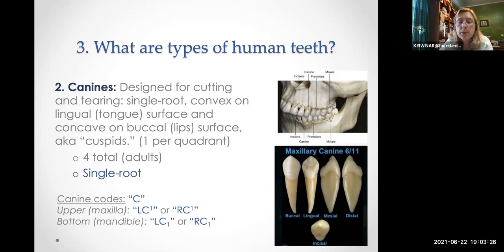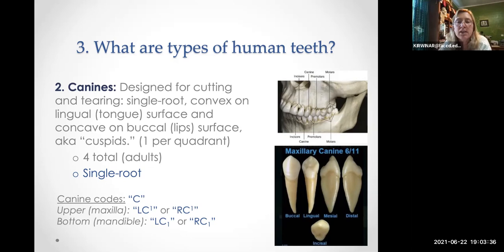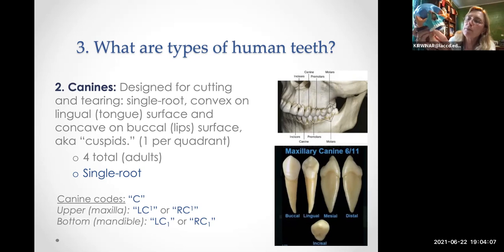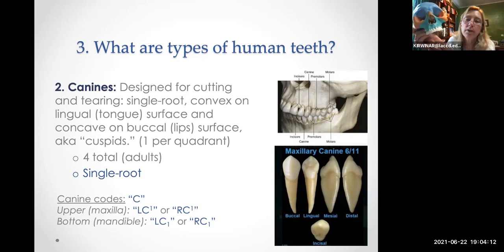Canines: we have only one canine in each quadrant, but we still give it the code C1 because a person may be born with two canines or no canines, or they may have had them extracted. Canines are designed for cutting and tearing; they have a single root but a more rounded occlusal surface rather than a flat cutting edge. Adults have four canine teeth total. The code for a top right canine would be R, C superscript 1.